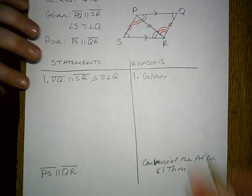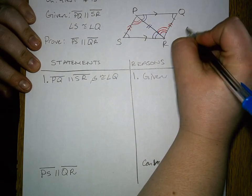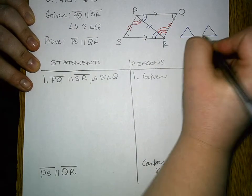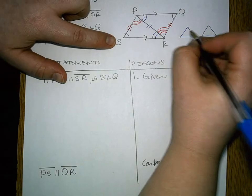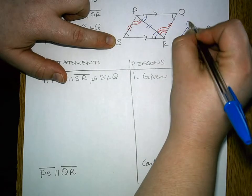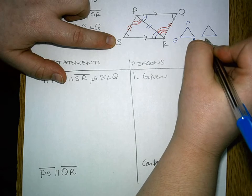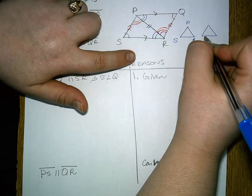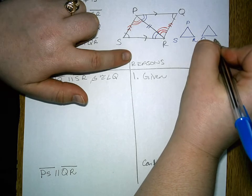The other suggestion that I have is to draw out any triangles that you need to prove that are congruent as part of the proof. So in this example, triangle SPR needs to be proven congruent to triangle QPR.